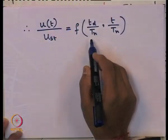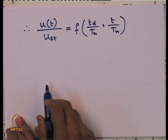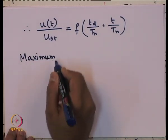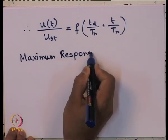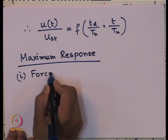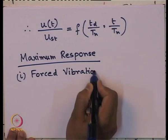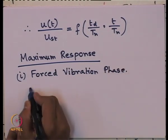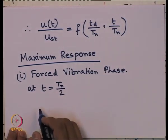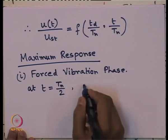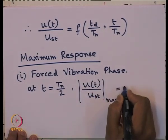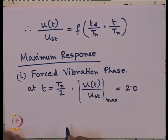Both ratios (t_d/T_n and t/T_n) are important parameters. To find the maximum response: in the forced vibration phase, at t = T_n/2 — that is, t/T_n = 0.5 — the normalized response u(t)/u_st reaches a maximum of 2. This is because substituting into the formula gives 1 − cos(π) = 1 + 1 = 2.